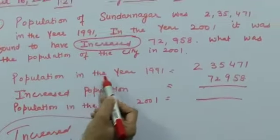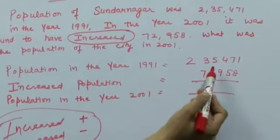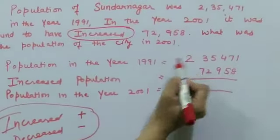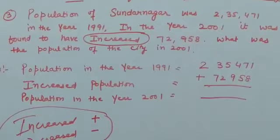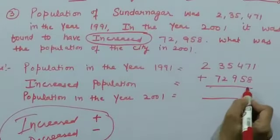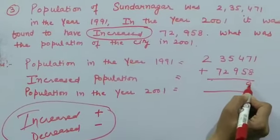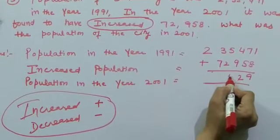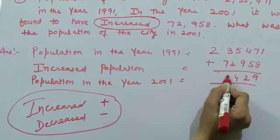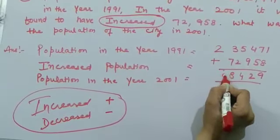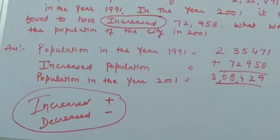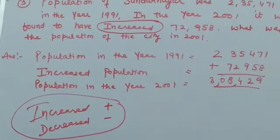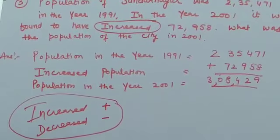Now see what I have written. Population in the year 1991, this one. Increased population, this one. Population in the year 2001. So we have added them. The answer is: nine, two, four, eight, zero, three. That means 3,08,429. Is it clear?